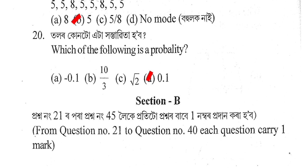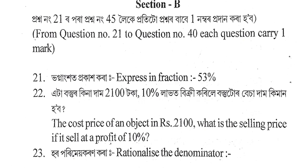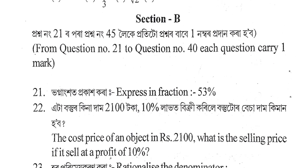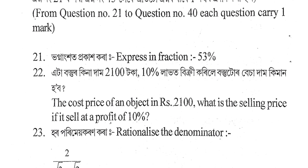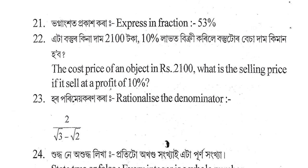Now moving to Section B. Each question in this section carries 1 mark. Short answer questions follow. Each question must be answered in brief. Questions include expressing fractions — 53 as a fraction — and working with square roots such as 0.1 square root and 0.2 square root.